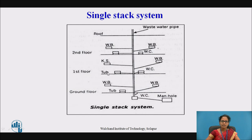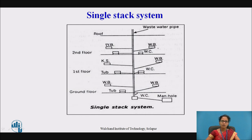The wash basins, WCs, kitchen sinks, and tubs — with their traps — are all connected to this vertical pipe. All the sanitary waste is collected in this single vertical pipe and directly connected to the drainage system. This system is economical as it consists of only one single pipe, and the cost is less. It is effective if the depth of the water seal is less than 75 mm. No separate pipe is provided for ventilation. That is why it is called the single stack system.